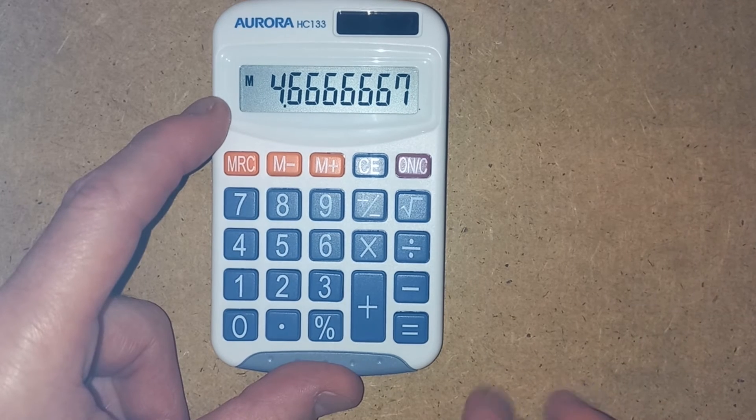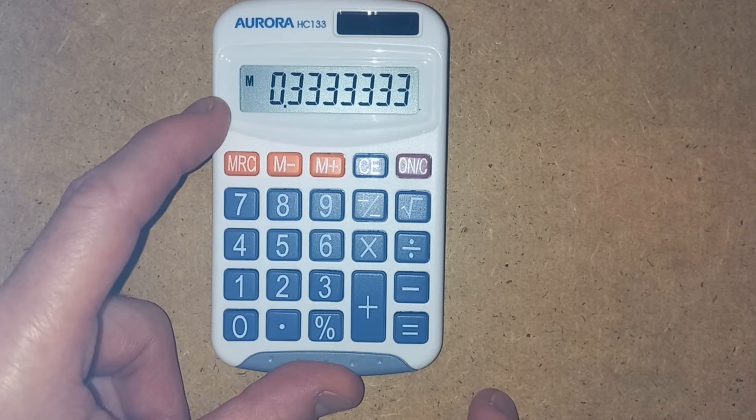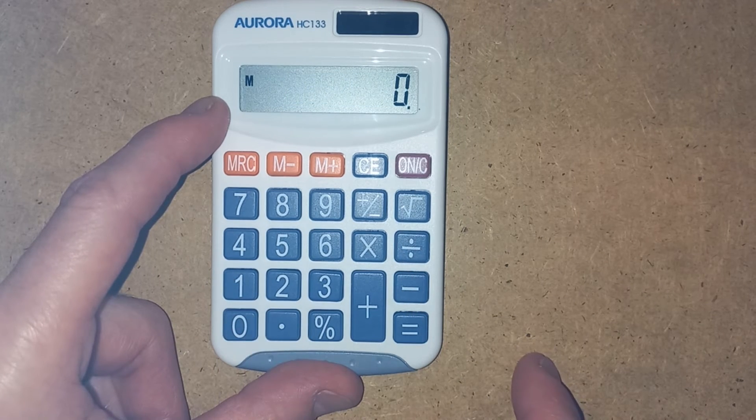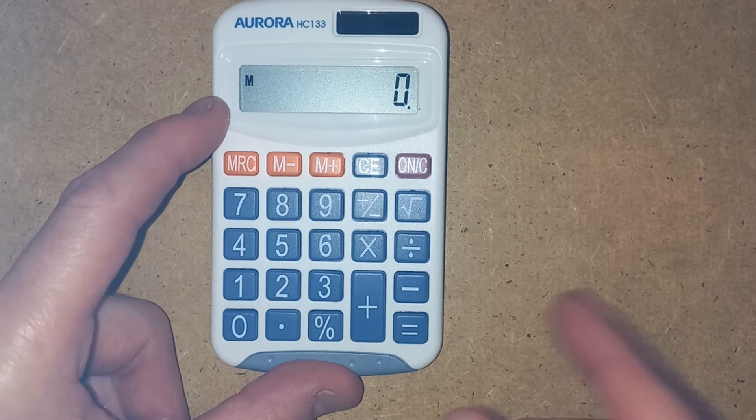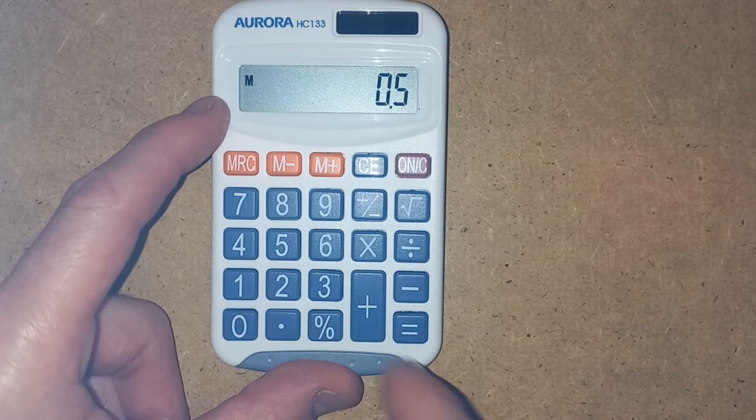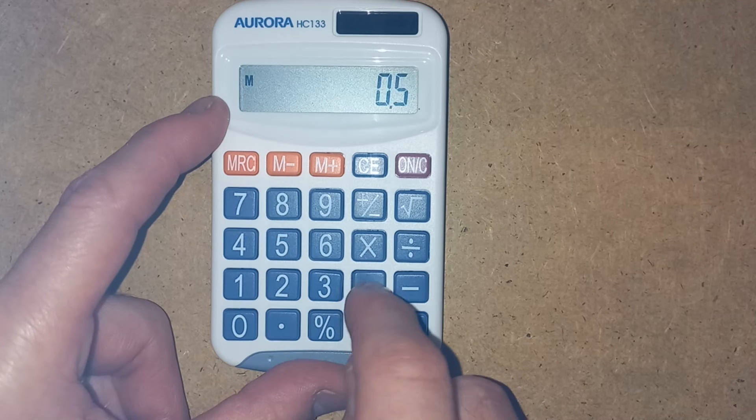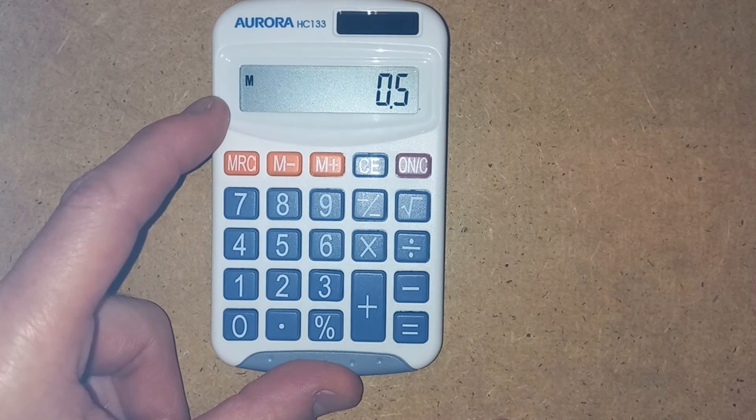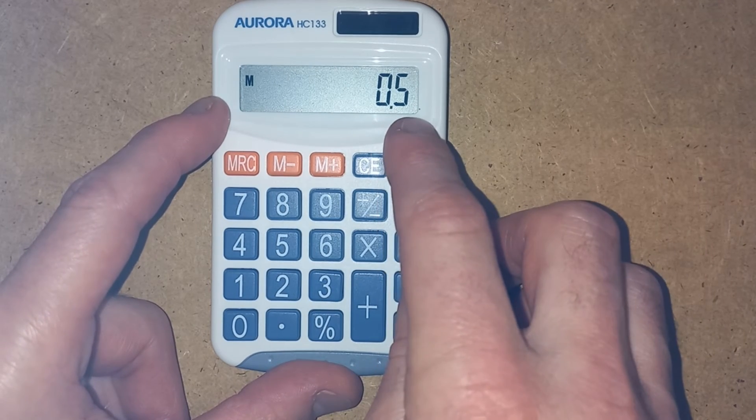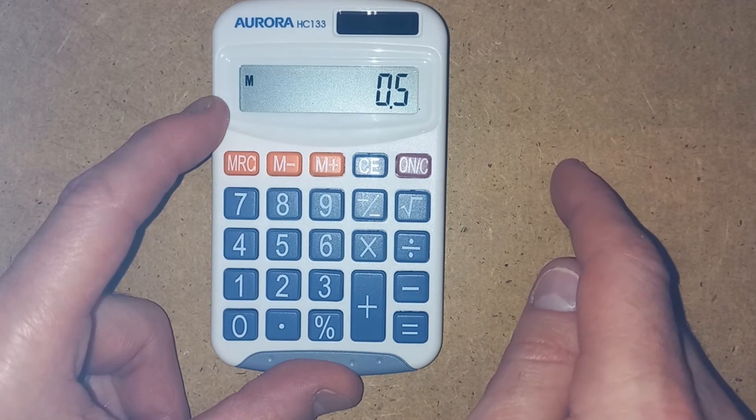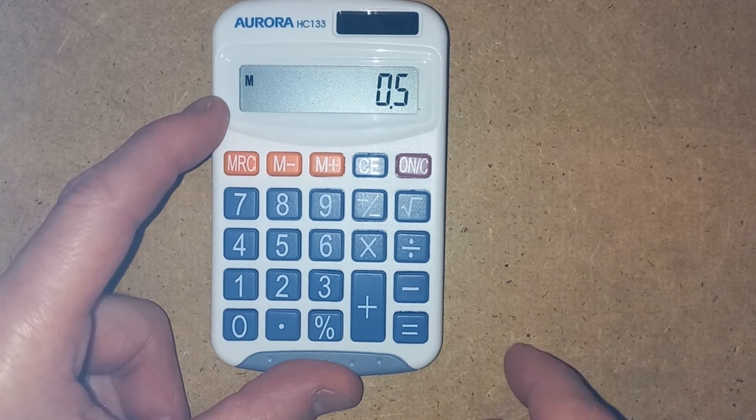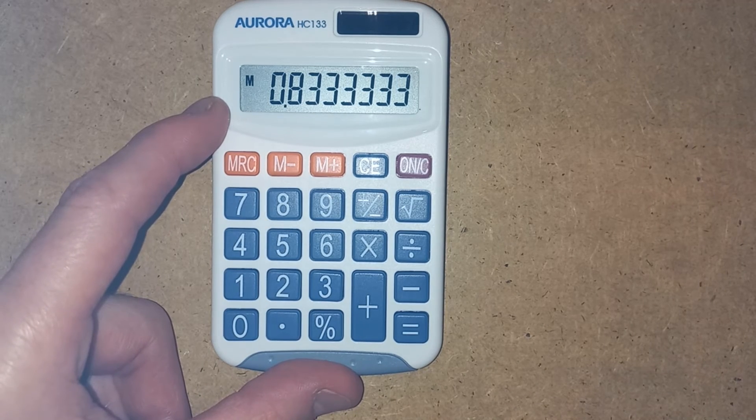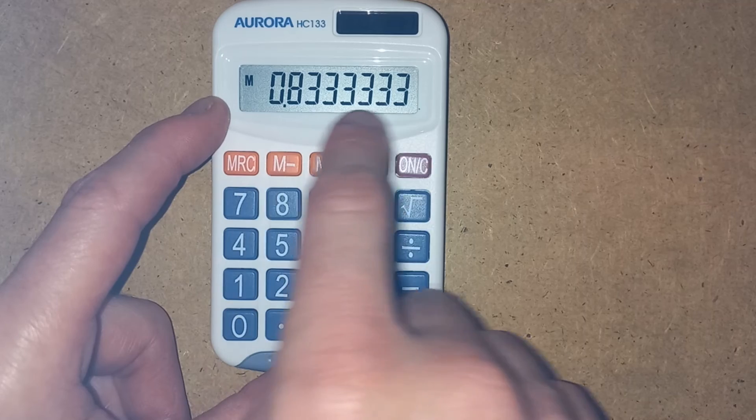So it can be quite handy. Or if we've already got something in the memory, like the third, it might be we work something else out. So I don't know, we might have wanted to add a third to a half. Well, we've done the third, a half is 0.5. We can, well, actually, we can just press M plus, and it adds it to the memory. So it's added that 0.5 to what we had in there before, which was the 0.33333. So if I do memory recall, I've now got 0.833333. So it's added the 0.5 to it.